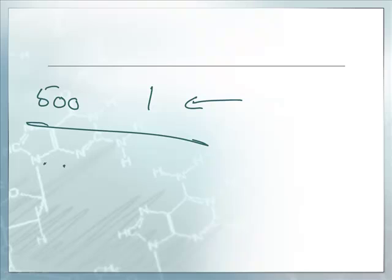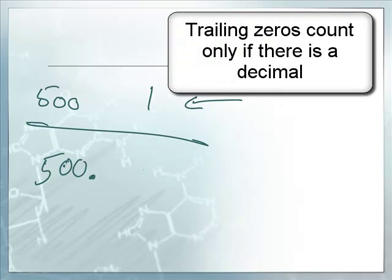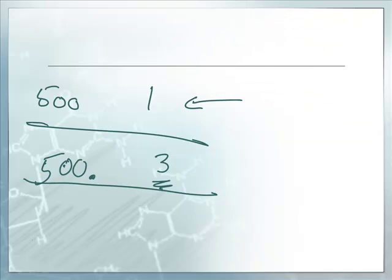Now, to contrast that, 500 point - 500 with a decimal. That has three significant figures. Even though there's trailing zeros, since there's a decimal point they count. So this tells us that something is accurate to the ones place. So it measures 498, 499, 500, 501, 502, and so on.